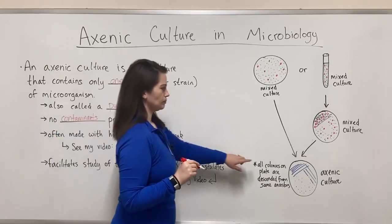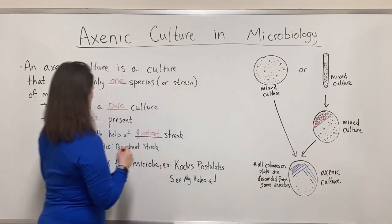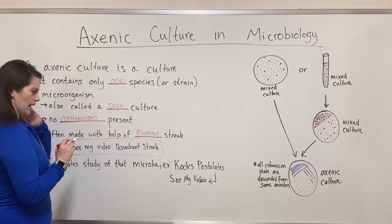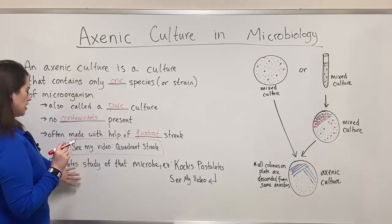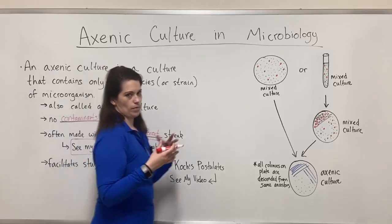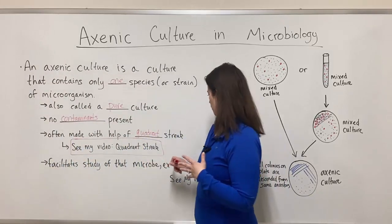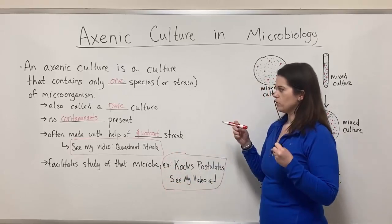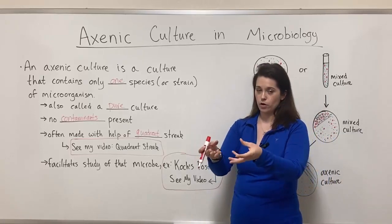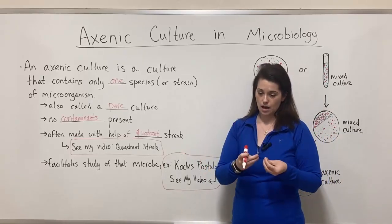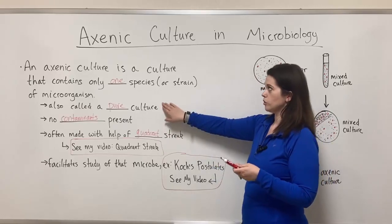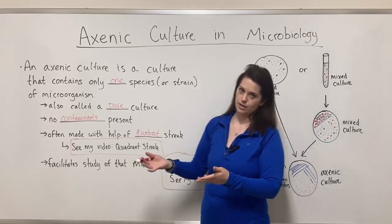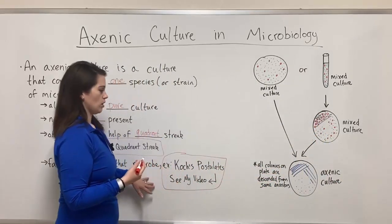A quadrant streak looks something like this. I have a full video on how to make a quadrant streak and why it's useful, so check that out if you're interested. Axenic cultures also facilitate study of whatever the microbe is. For example, if you are familiar with Koch's postulates — I do have a video on Koch's postulates if you want to know what that is — it relies on having to take some sort of microbe out of a sick individual, grow it in pure culture, in axenic culture, inoculate it into a new host to see if it causes the same disease. There's a lot more information in that video on Koch's postulates.